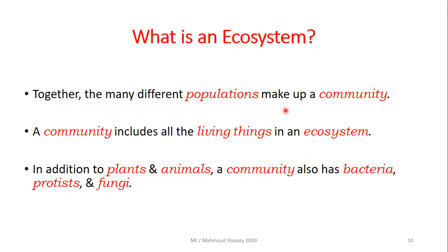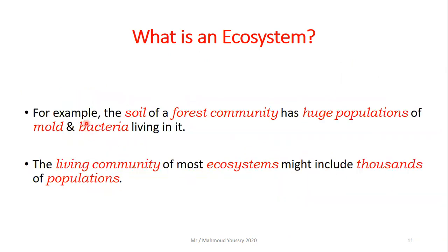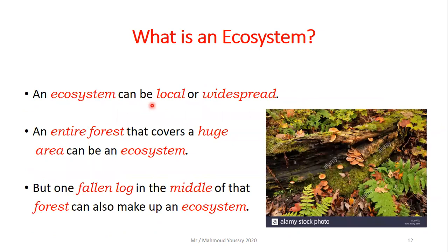Together, many different populations make up a community. A community includes all the living things in an ecosystem — these are the biotic factors. In addition to plants and animals, a community may also include bacteria, protists, and fungi. For example, inside the soil of a forest community there are huge populations of mold and bacteria living together.